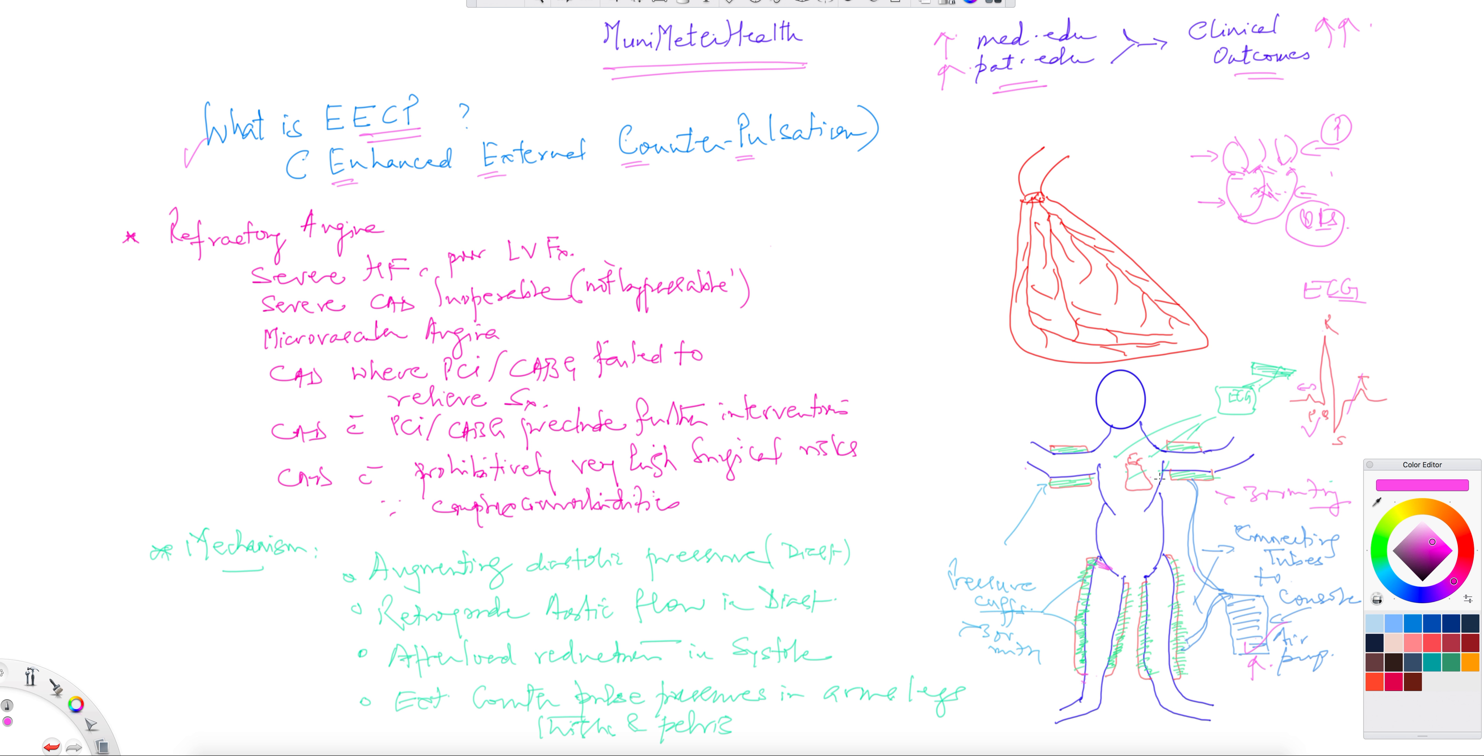Once you do that, the key is that this coordinated air pressure rises and releases quickly in all these cuffs. All of that is quickly happening in every cardiac cycle. Each time a PQRST is being generated, each heartbeat, it's coordinated with the QRS, not with the P wave.